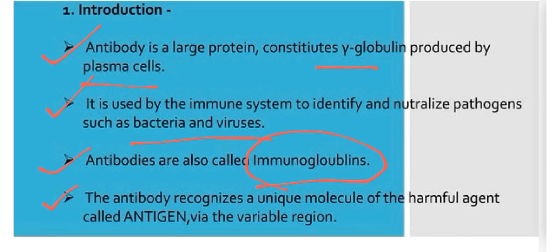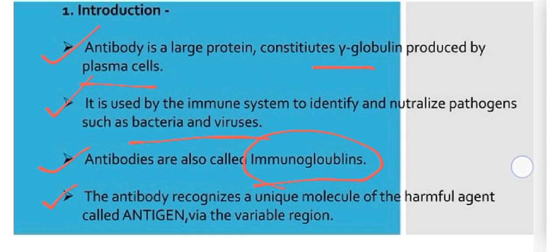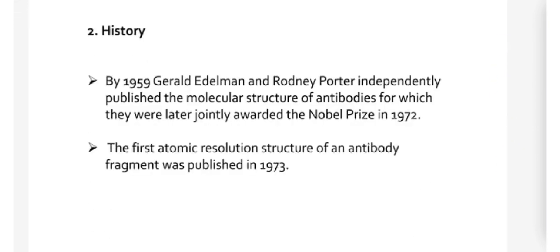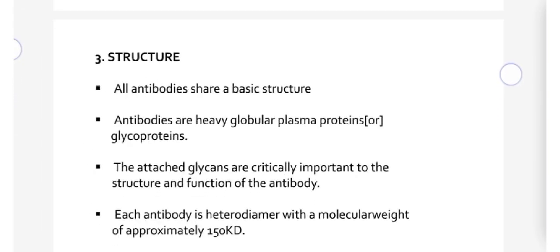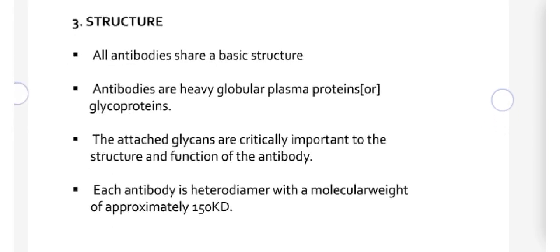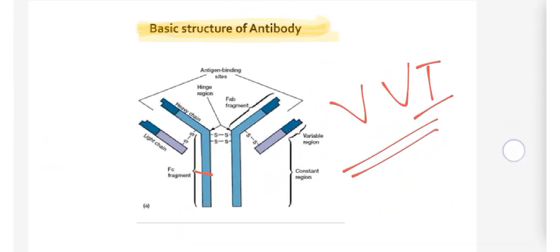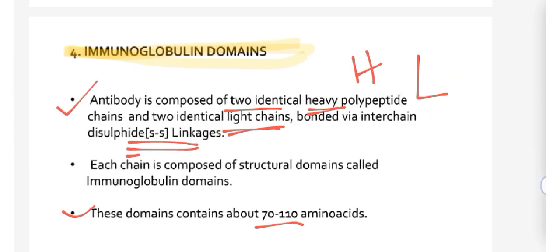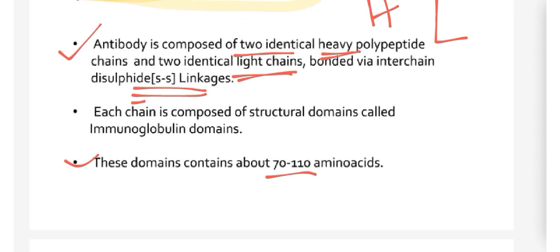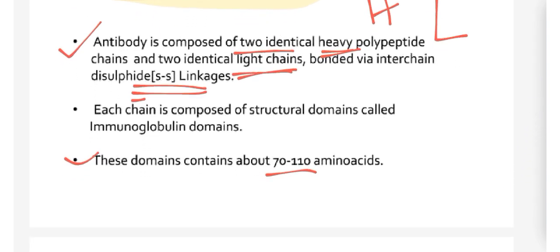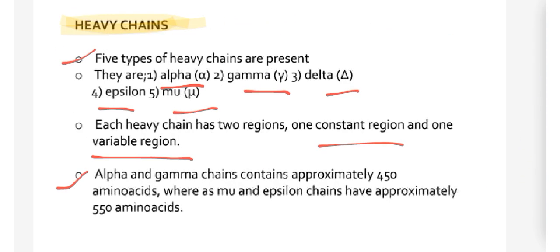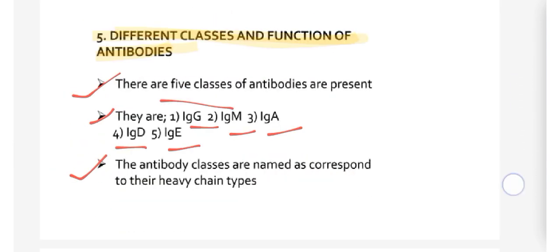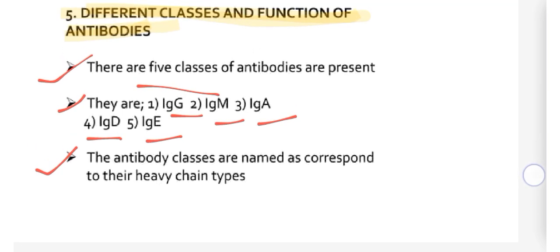Let's summarize what we learned. At first we saw the introduction and the history of the antibody, the structure of the antibodies, and the heavy chain, light chain, disulfide linkage bond. The five types of heavy chains, light chains, and different classes and functions of antibodies.